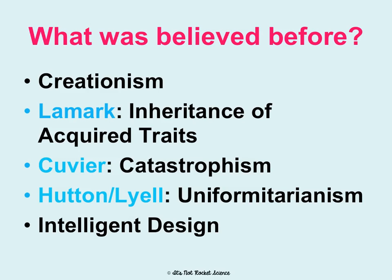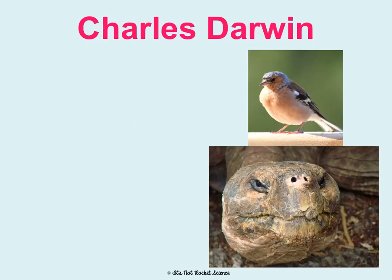Intelligent design is really a more science-sounding way of saying creationism. It basically says that things are intelligently designed and that there is some creator, but it doesn't specifically name a god. And then we have Darwin, who came in and rocked everyone's world.